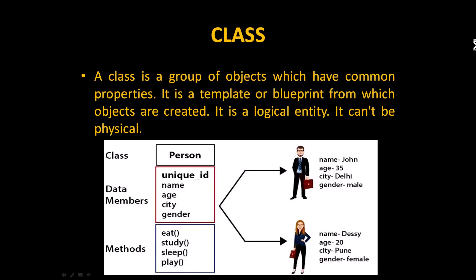Welcome to Flying Grip Academy. Today we are going to discuss what is Java, and what is class and object. A class is a group of objects which have common properties. It is a template or blueprint from which objects are created.